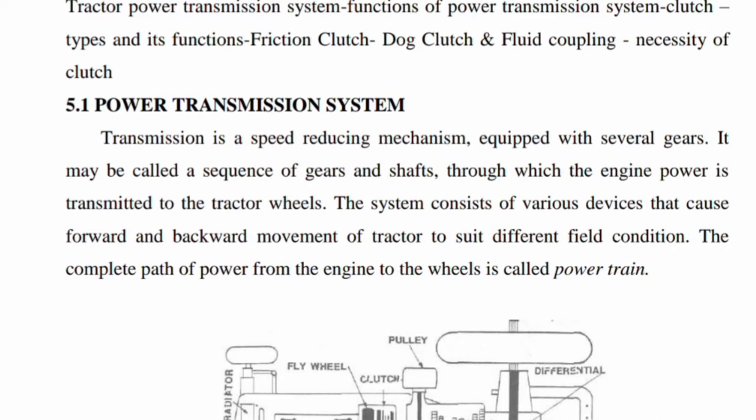Transmission is a speed-reducing mechanism equipped with several gears. It may be called a sequence of gears and shafts through which the engine power is transmitted to the tractor wheels. The system consists of various devices that cause the forward and backward movement of the tractor to suit different field conditions. The complete path of power from the engine to the wheels is called the power train.